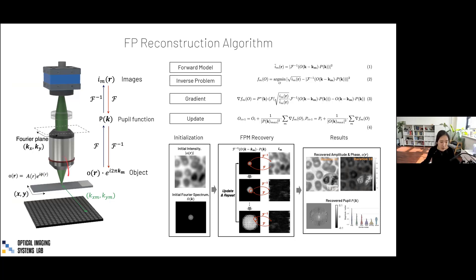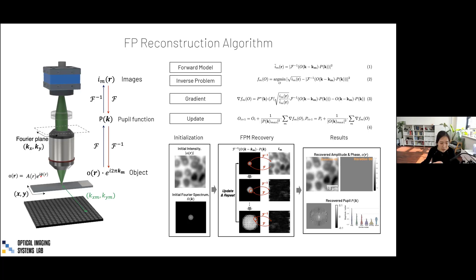In the reconstruction process, we model the sample as a thin layer with a complex transmittance, which has both an amplitude term and a phase term. The amplitude term corresponds to the absorption in the sample, while the phase term corresponds to the phase delay attributed to the refractive index distribution and thickness distribution of the sample.